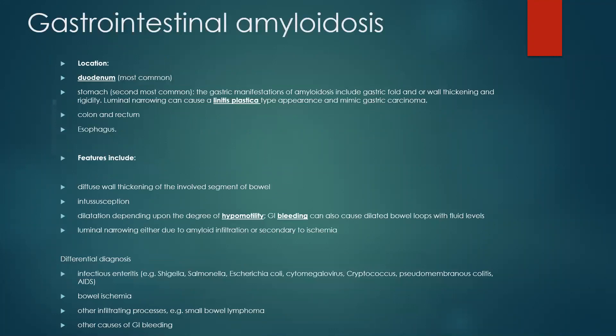I'm going to concentrate mostly on gastrointestinal amyloidosis, because this was the clue with our patient. The most striking features were in the gastrointestinal system. In the GI tract, it mostly affects the duodenum, followed by the stomach, where it appears similar to linitis plastica.